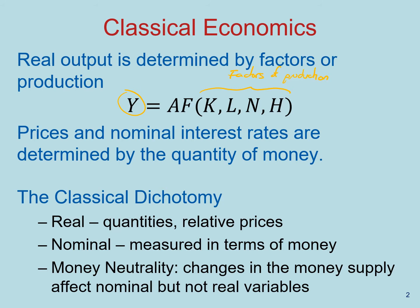Capital, Labor, Natural Resources, and Human Capital Productivity, A, determine how much each country could do with the factors of production they used.